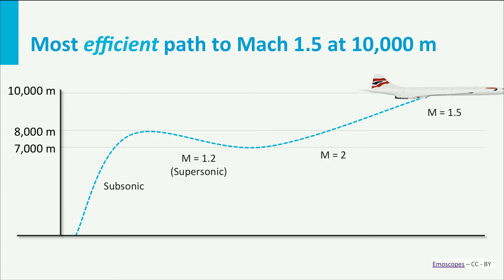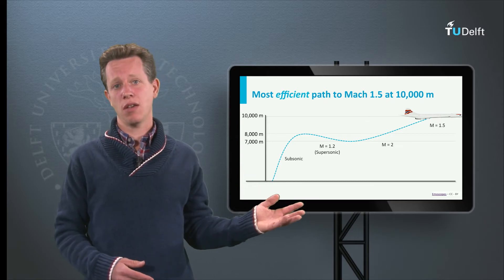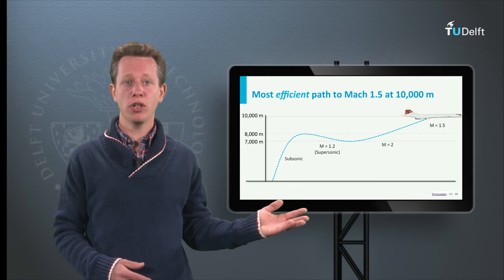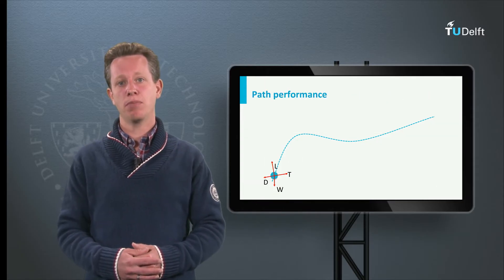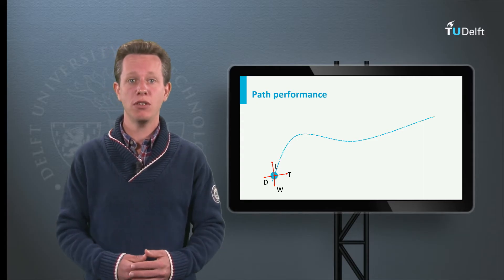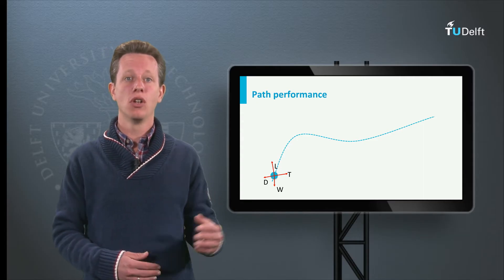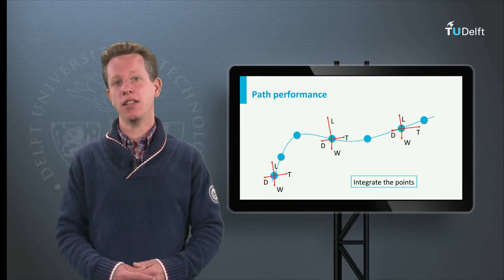Since the aircraft is accelerating and decelerating, it is in fact an unsteady flight, whereas in the previous lectures we considered a steady flight. So what you just saw here is an example of path performance instead of point performance. Before you can calculate path performance you need to be able to calculate the performance at each point of the path and then integrate it.